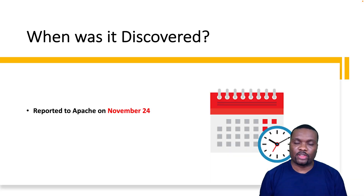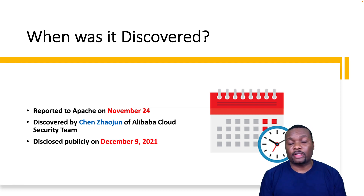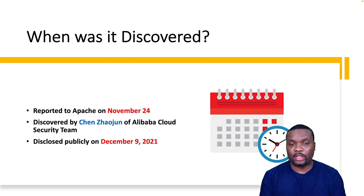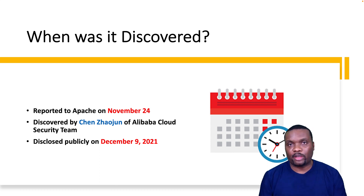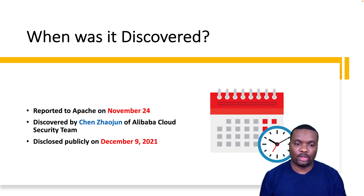This was discovered on November 24th by a member of the Alibaba Cloud security team. The Apache Foundation — specifically the Log4j project — was notified on the 24th, and then on December 9th this particular vulnerability was published publicly via Twitter, along with a proof-of-concept pull request.